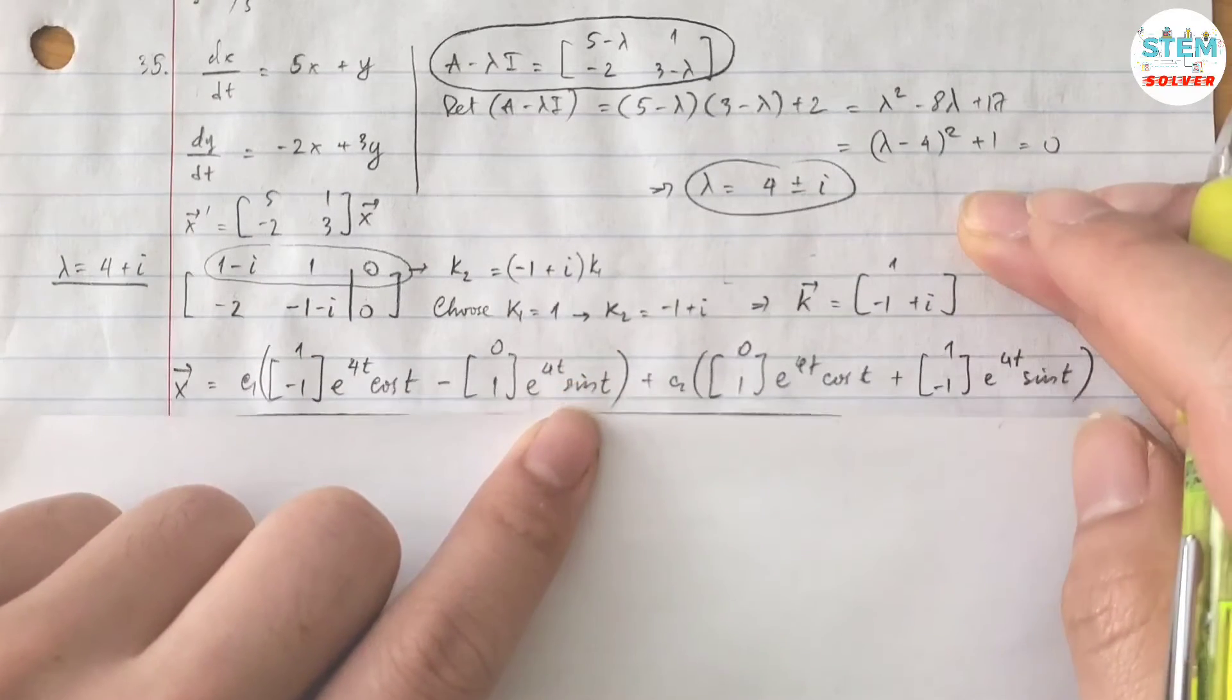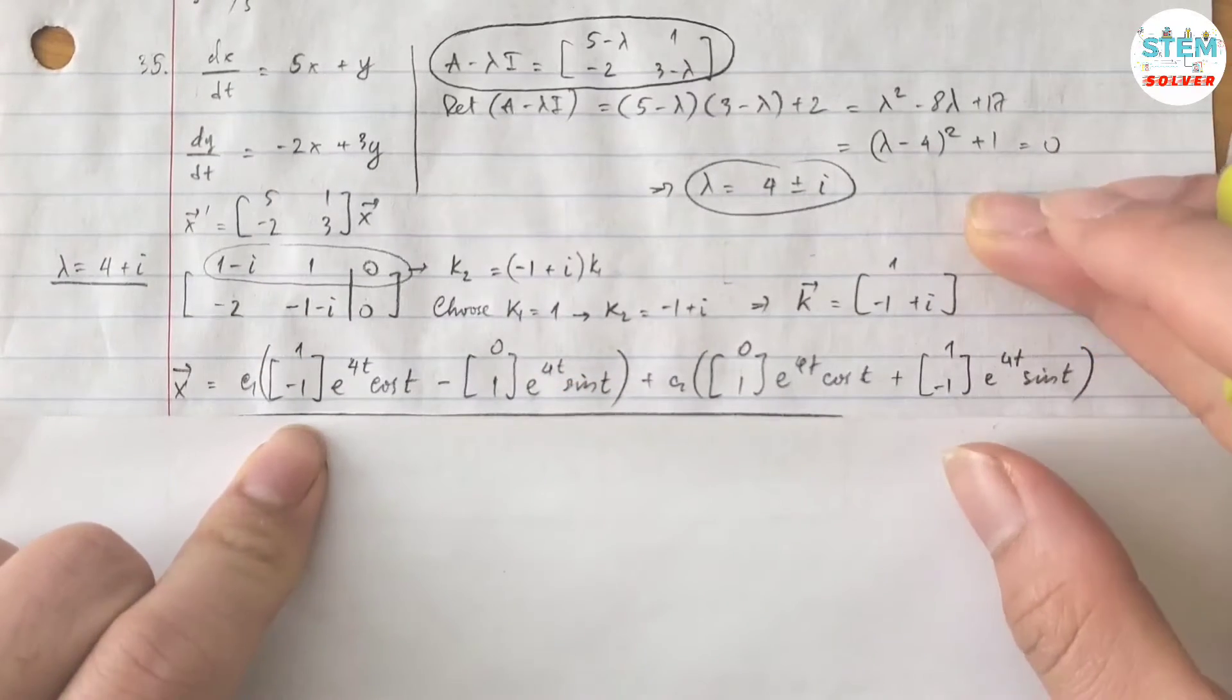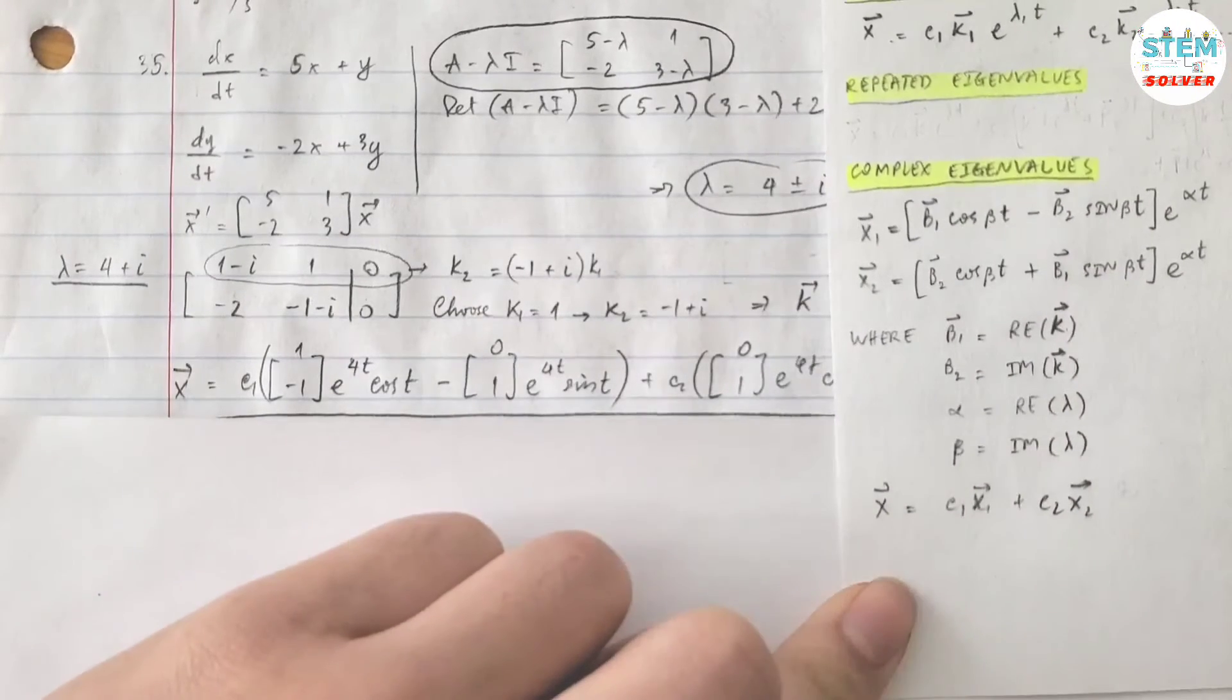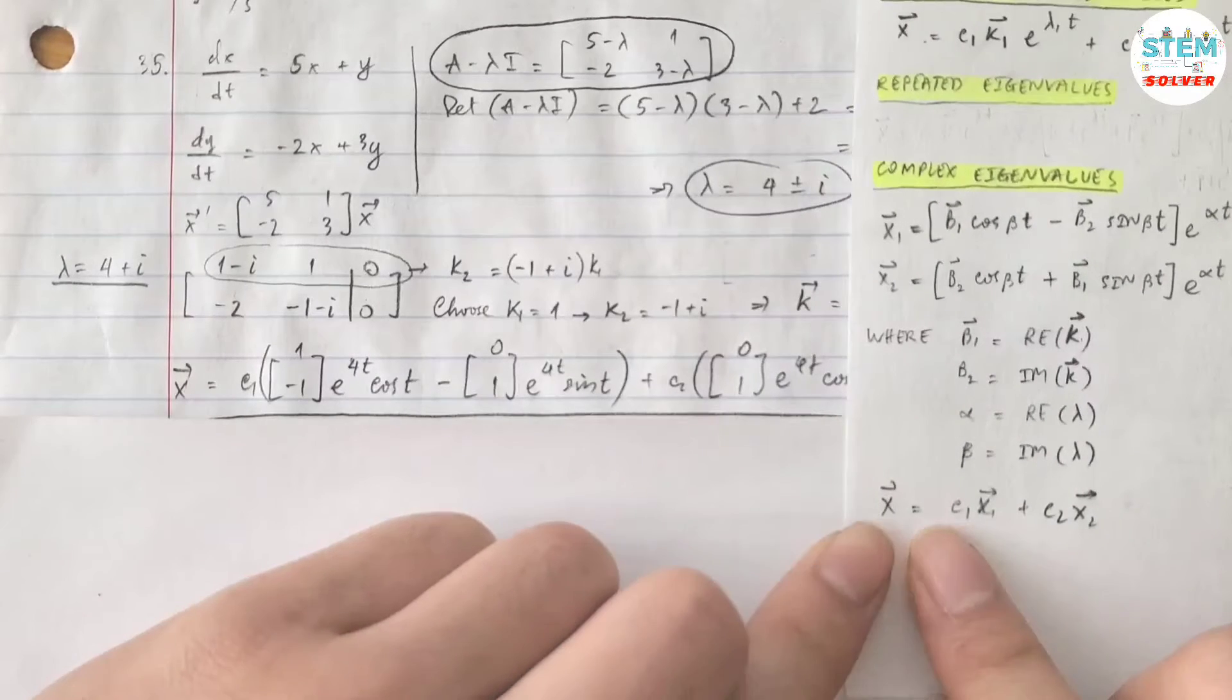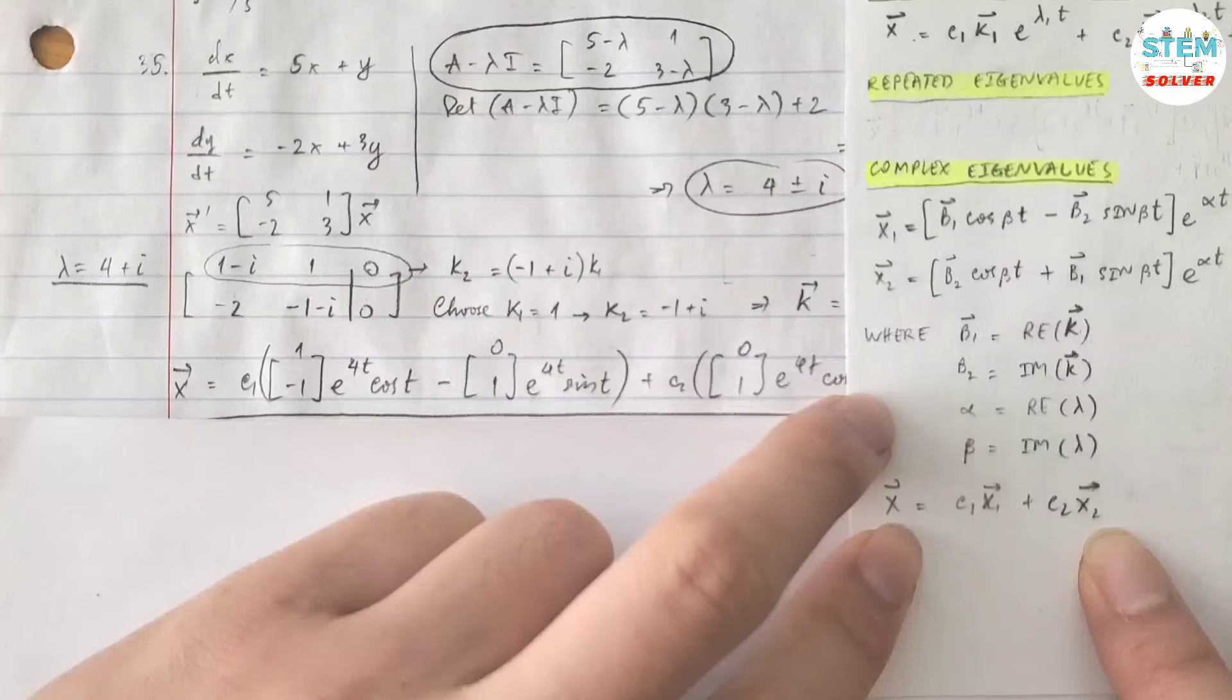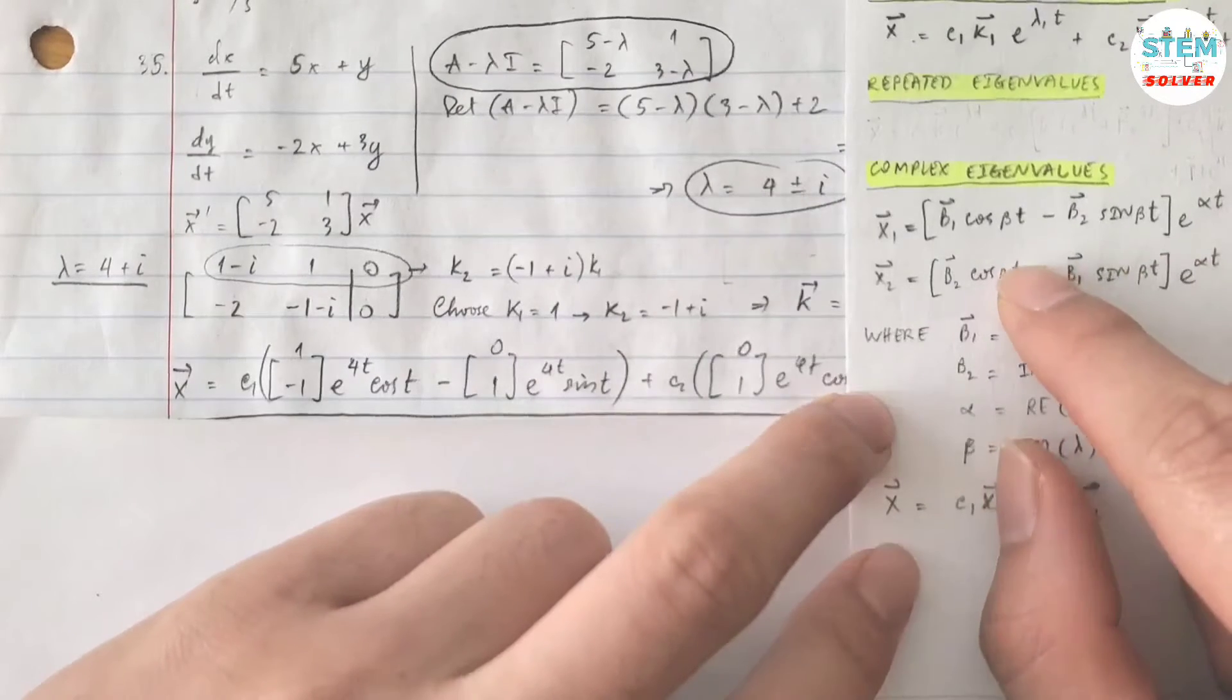Now it's time to write the answer. So because you have complex eigenvalues, your final answer will be given in this form: vector x equals c1 times vector x1 plus c2 times vector x2. Let me go over the formula first.